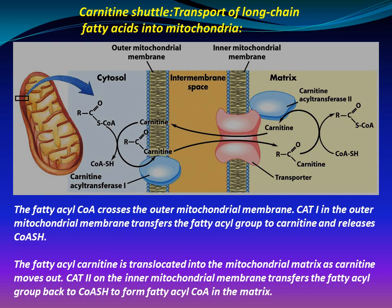The carnitine shuttle for transport of long-chain fatty acids into mitochondria: the fatty acyl-CoA crosses the outer mitochondrial membrane. Carnitine acyl transferase-1 in the outer mitochondrial membrane transfers the fatty acyl group to carnitine and releases coenzyme A. The fatty acyl-carnitine is translocated into the mitochondrial matrix as carnitine moves out. Carnitine acyl transferase-2 on the inner mitochondrial membrane transfers the fatty acyl group back to coenzyme A, forming fatty acyl-CoA in the matrix.